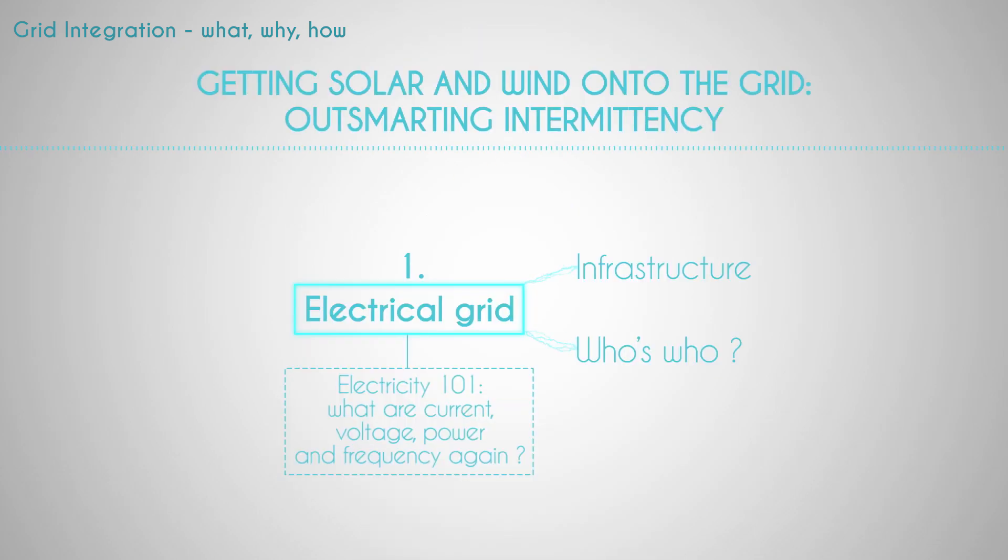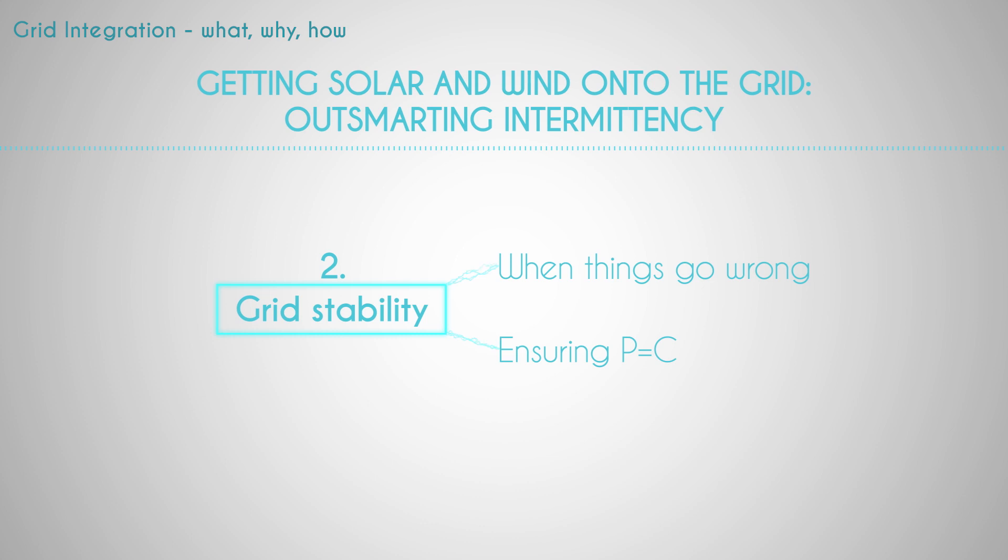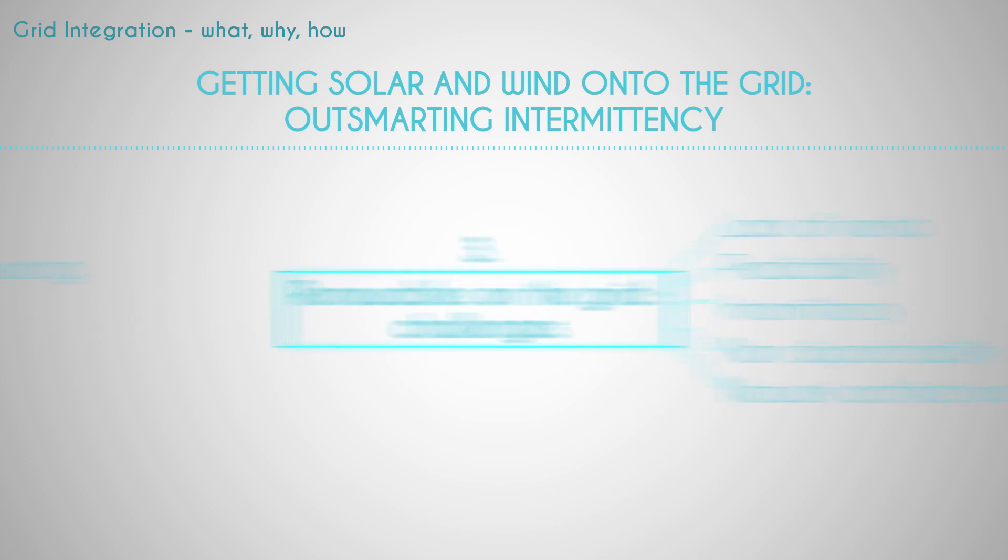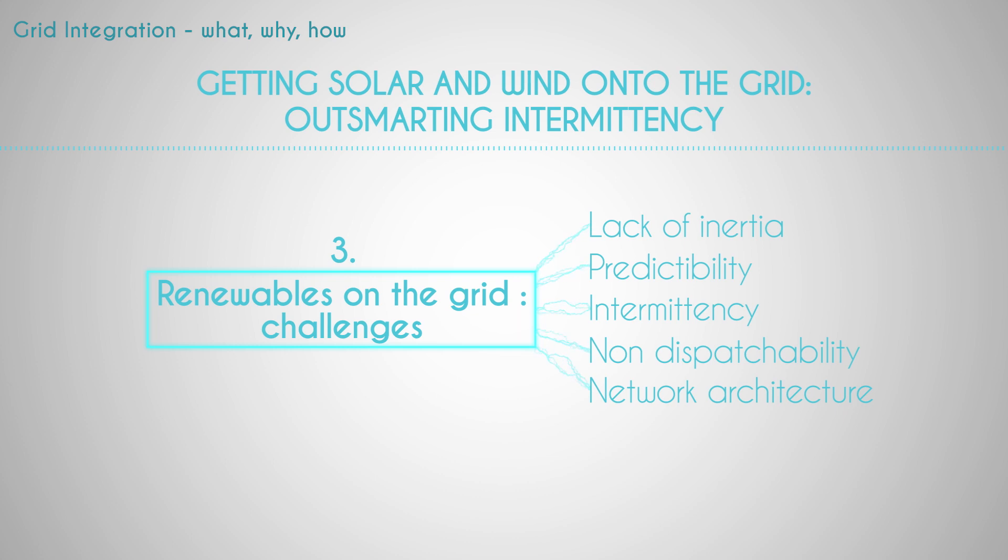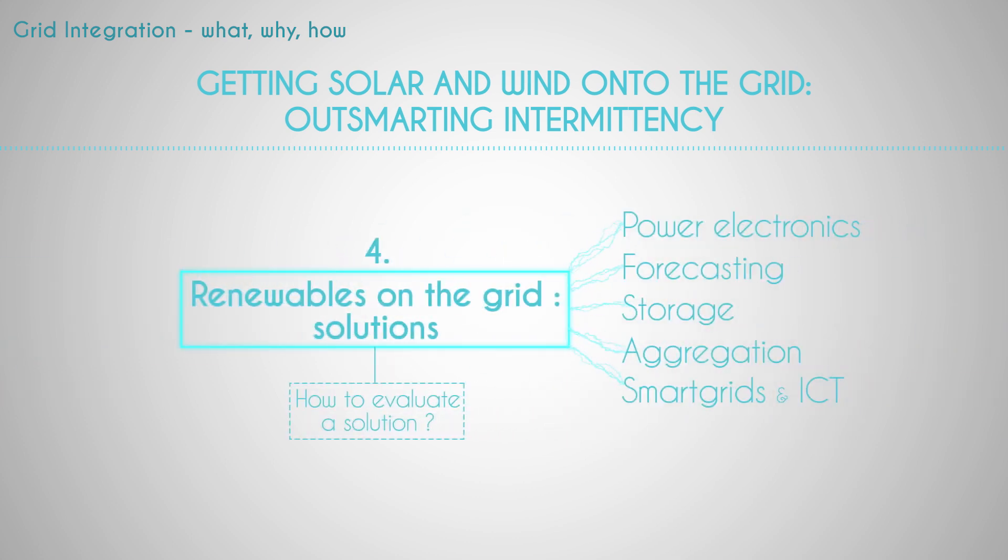The purpose of this course is to introduce you to this perspective. To do so, we will first present electrical grids in more detail including the main physical, economical and political actors of this play. We will then discuss grid stability. Why is it so important and how is it currently ensured? This will allow us to highlight the specific challenges raised by solar and wind electricity before we give an overview of current trends considered to face these challenges.